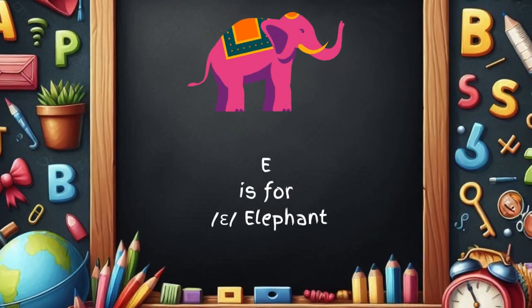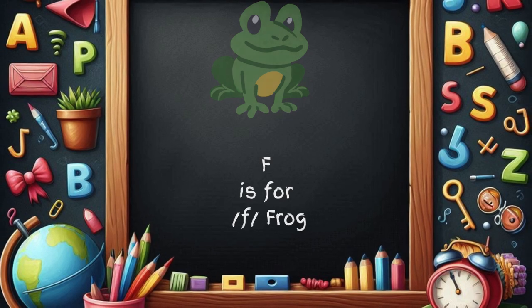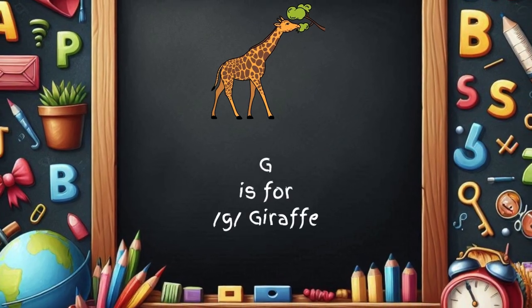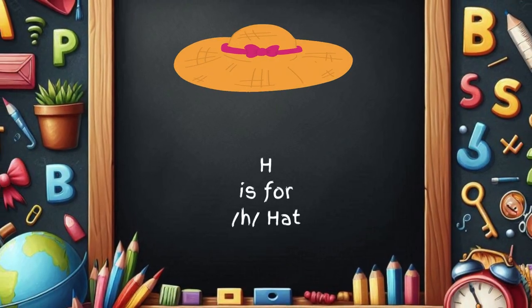E is for elephant, e-e-elephant. F is for frog, f-f-frog. G is for giraffe, g-g-giraffe. H is for hat, h-h-hat.